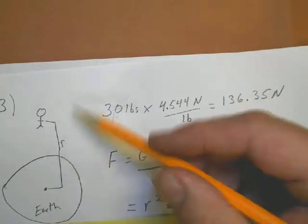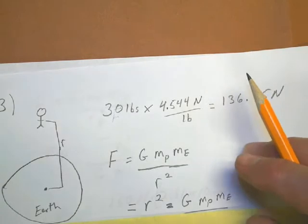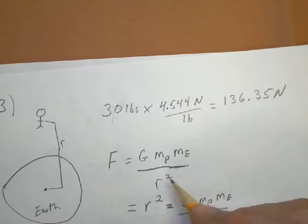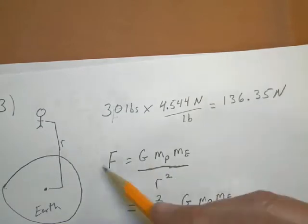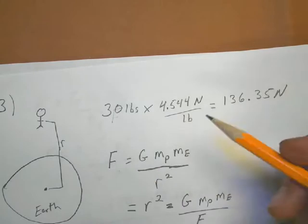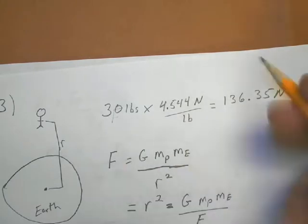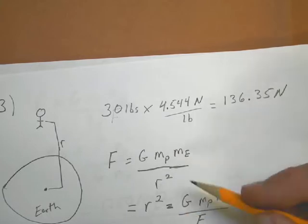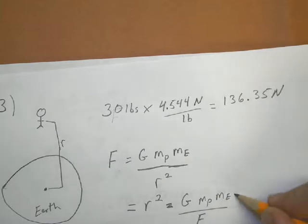So in this case, you're solving for R squared. So R squared, you multiply both sides of the equation by R squared, you get R squared over here, and you divide them both by the force. So the radius, the distance he is above the center of the earth, squared is equal to G times the mass of Pete, times the mass of the earth, divided by the force, which is 136.35 Newtons.